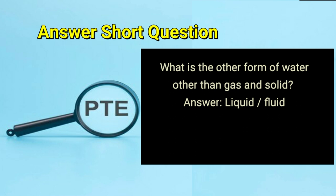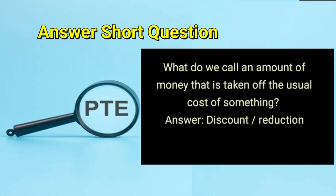What is the other form of water other than gas and solid? Answer: liquid or fluid. What do we call an amount of money that is taken off the usual cost of something? Answer: discount or reduction.